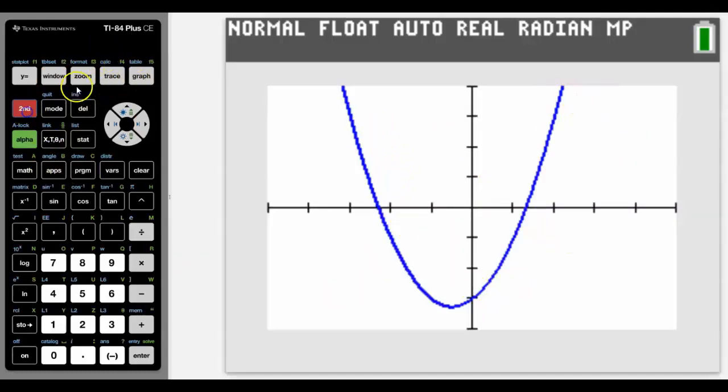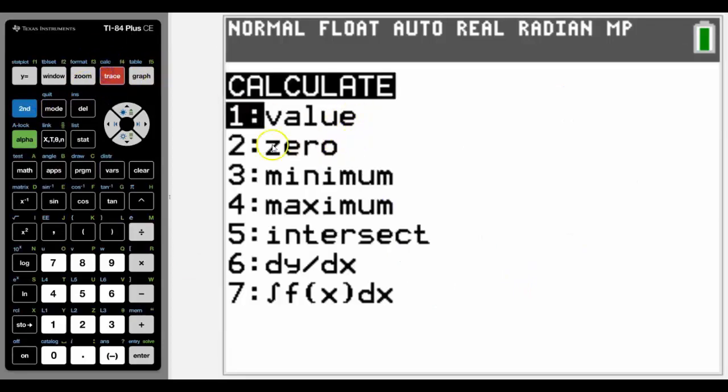As I said, we're focusing on the calc option which is above trace in blue, and options 1 to 5. 6 and 7 are the calculus parts of the calculate options which you do in year 11 and 12, derivative and integral, but we're going to focus on 1 to 5.